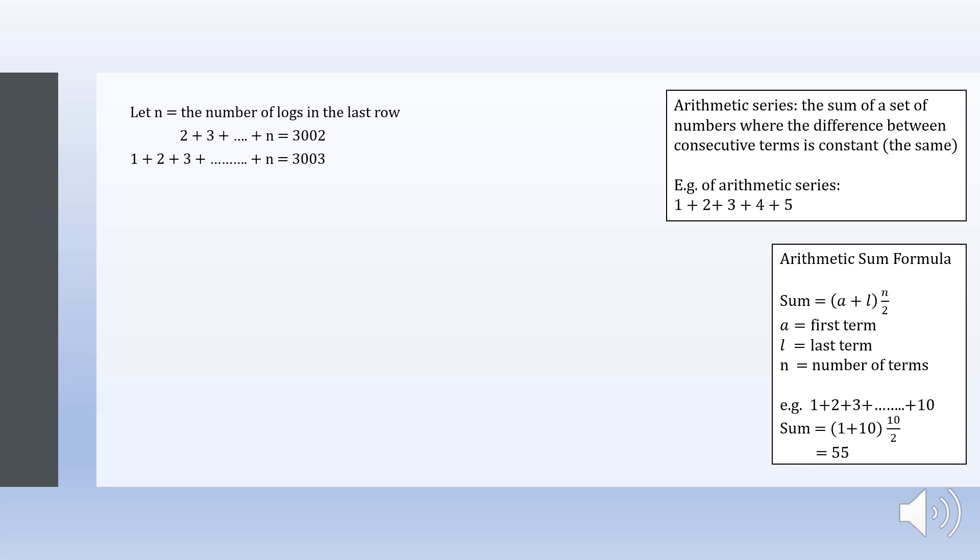Then we have to apply the arithmetic sum formula. So (1 + n) times n over 2 equals to 3003, where 1 is the first term, n is the last term, and n is also the number of terms in this series.